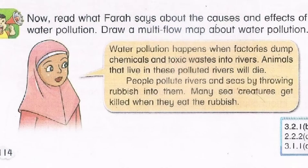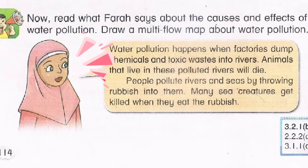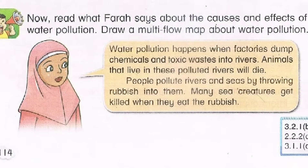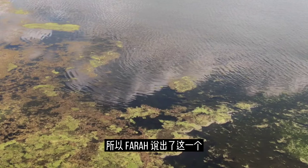Next, let's see Farah's dialogue. Read what Farah says about the causes and effects of water pollution. Draw a multi-floor map about water pollution. Water pollution happens when factories dump chemicals and toxic waste into rivers. Animals that live in these polluted rivers will die. People pollute rivers and seas by throwing rubbish into them. Many sea creatures get killed when they eat the rubbish.